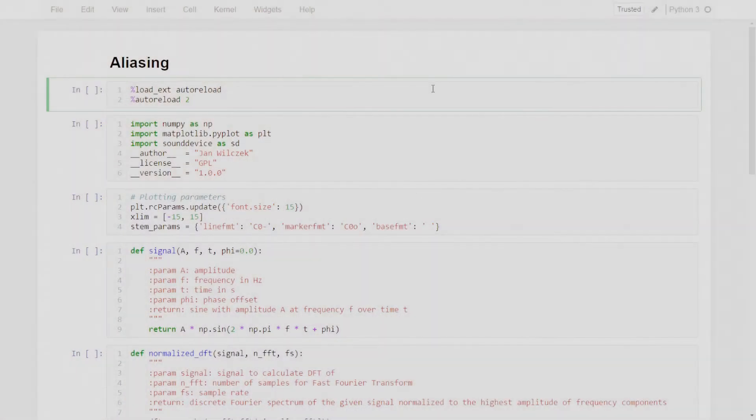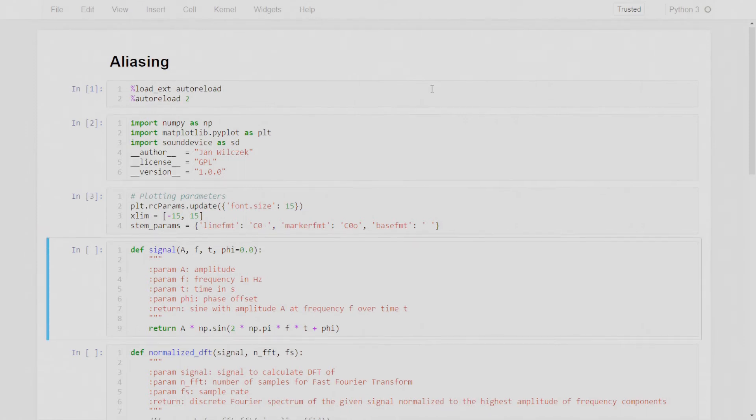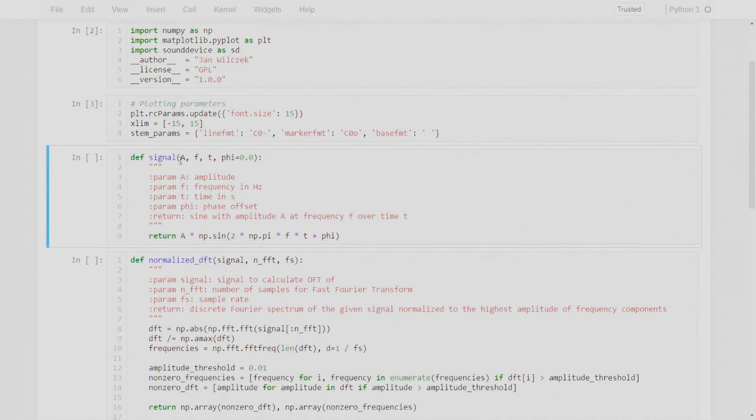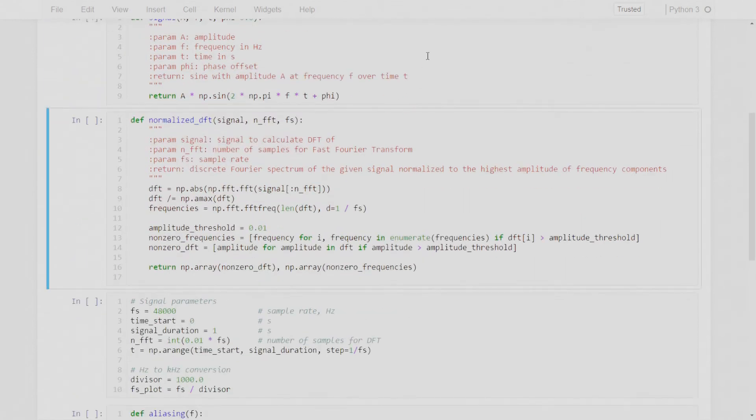Now that we've learned what aliasing is, let's look at some code and put it into practice. Okay, so we're in the Jupyter notebook and we're going to run a simple example of how aliasing can affect our sampled signal. Okay, so first we do some Jupyter commands, then we import numpy, matplotlib pyplot, and in this example I'm using some device for playing out audio. I defined some plotting parameters, and then there's the signal function which for given amplitude a, frequency f and time t with the phase offset phi returns a sine at that frequency with these parameters.